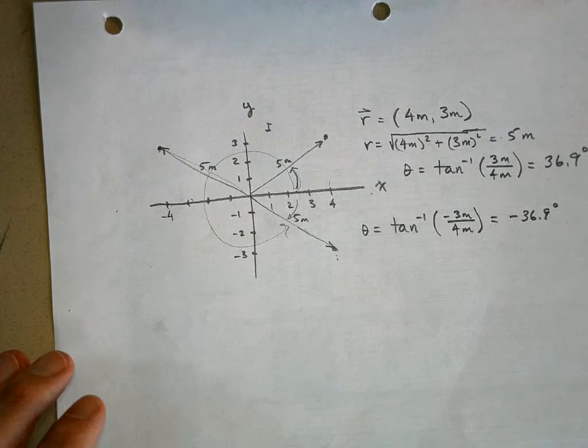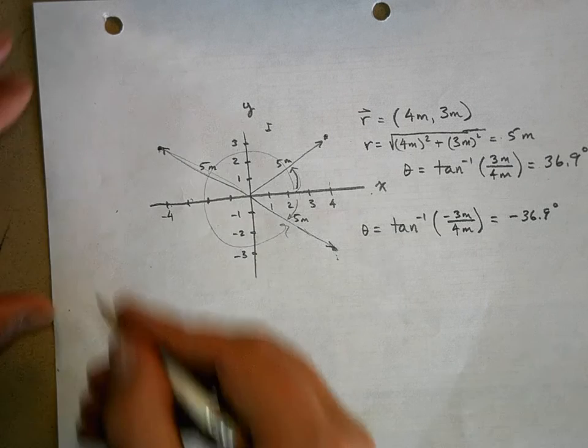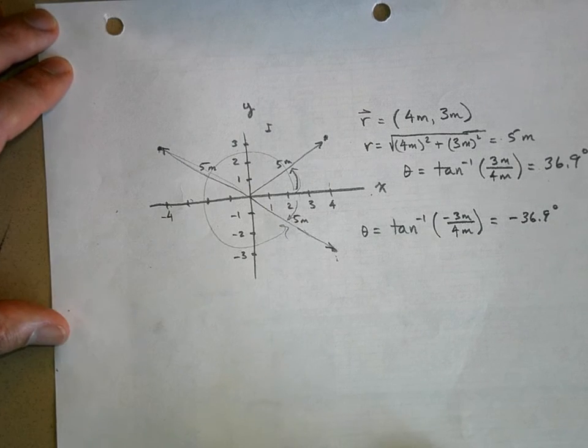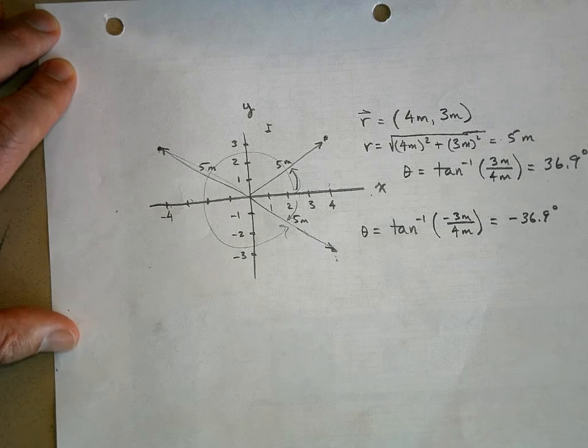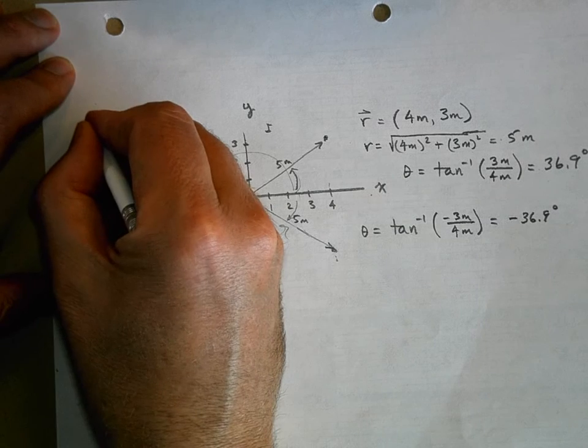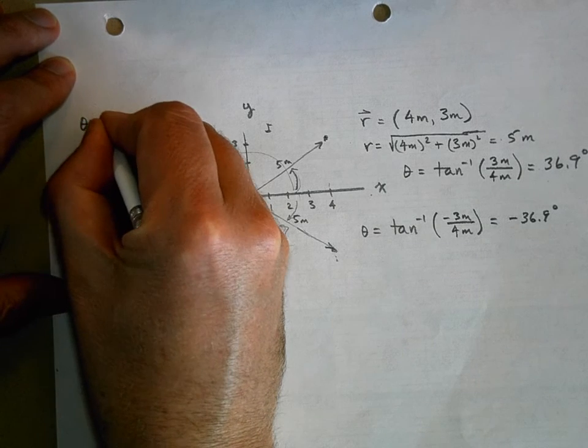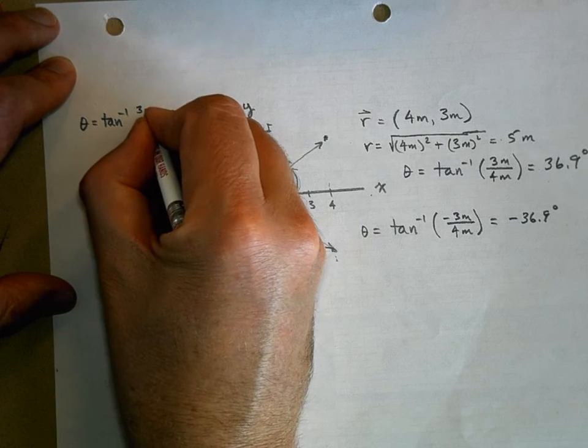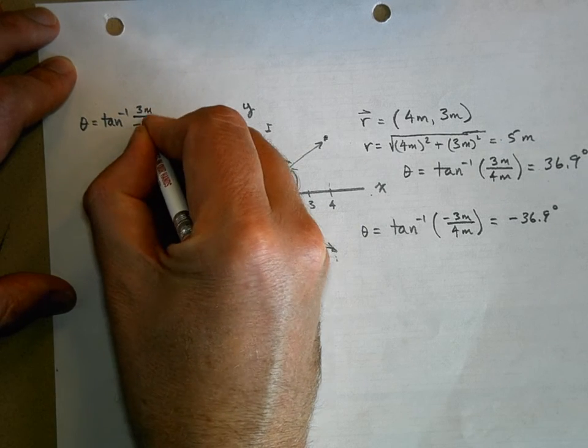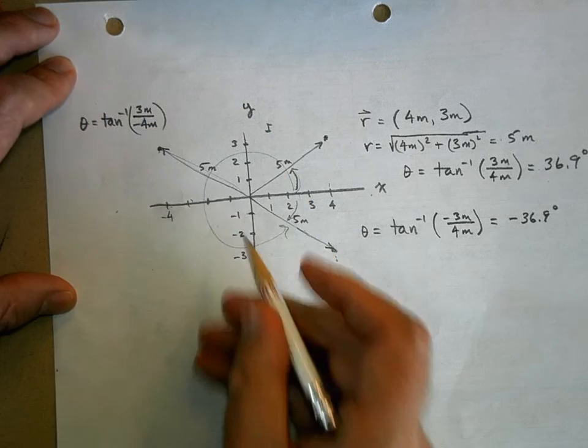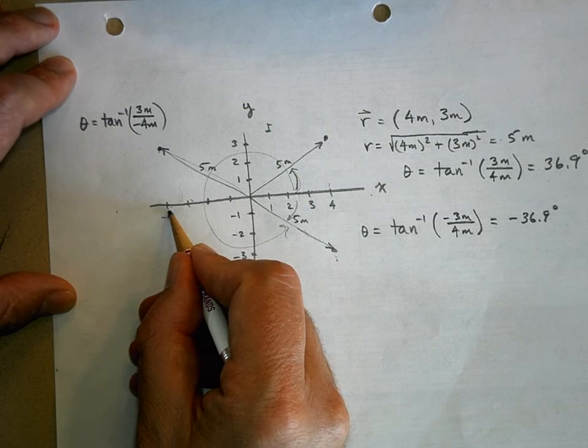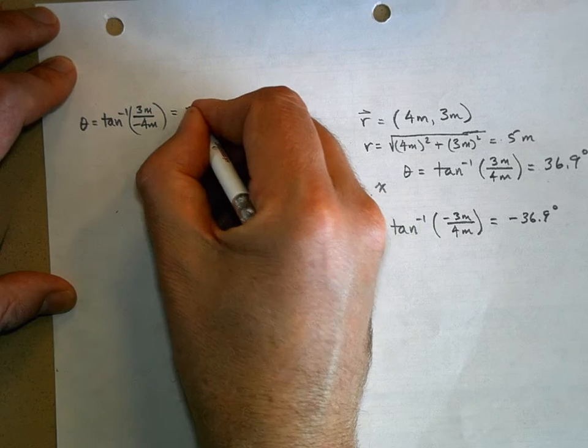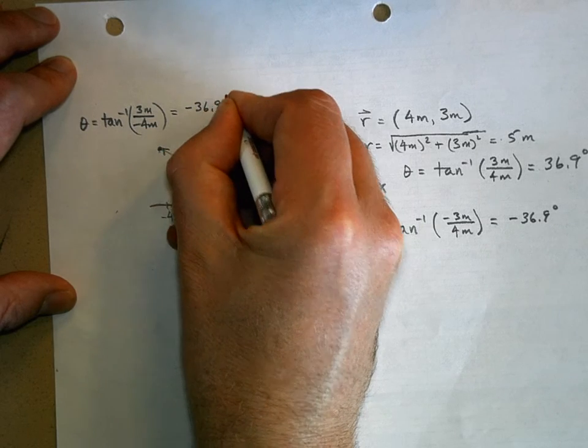But let's use inverse tangent. And really pay attention to this part. This is the part we're really trying to emphasize here. The inverse tangent of the y value, which is 3 meters, over negative 4 meters. Notice that our x value is negative now. Now, when you do that, you get negative 36.9 degrees.